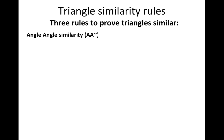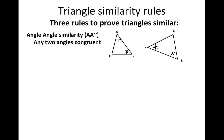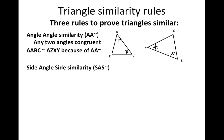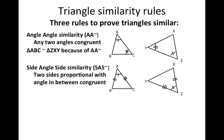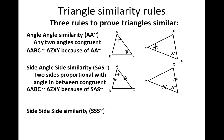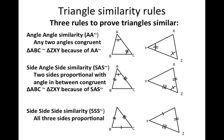Now, what are the three rules of triangle similarity? We have angle-angle similarity — any two angles are congruent, and if that's the case, then the triangles are similar. Triangle ABC is similar to triangle ZXY because of angle-angle similarity. We have side-angle-side similarity — two sides proportional with the angle in between them congruent. And then finally, side-side-side similarity — if the proportions of all three sides are proportional, then the triangles must be similar.